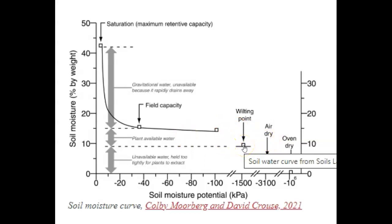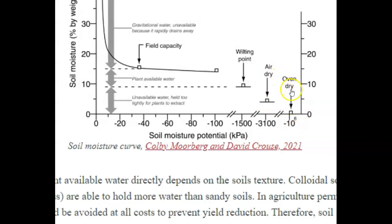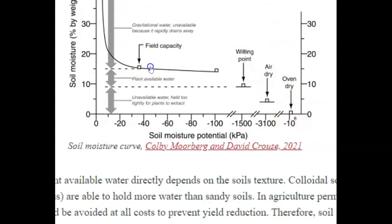So the permanent wilting point — as the soil gets drier and drier, when the air is completely dry, there's no water in the air. And if we cook it out with an oven completely, removing all the water, then we can know what the total water weight was in that soil.